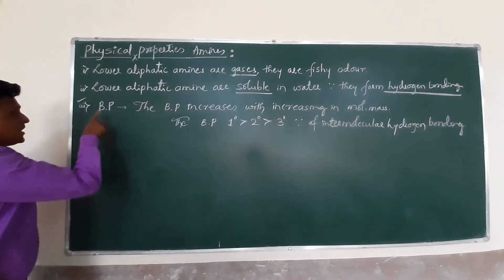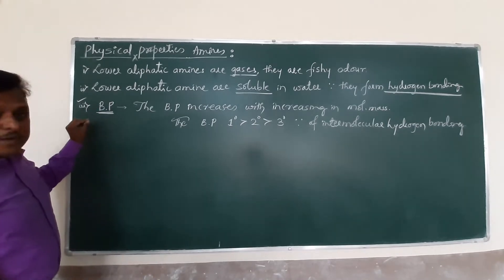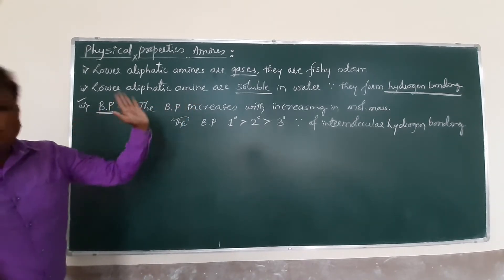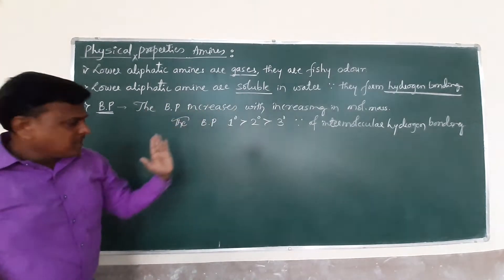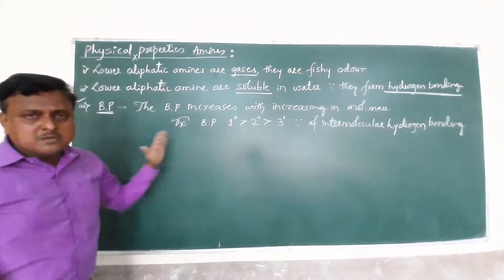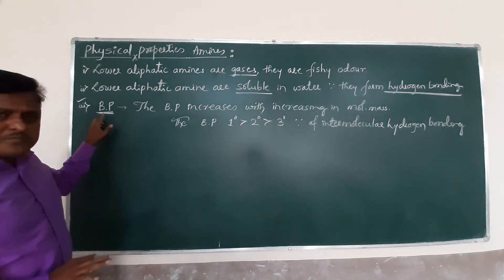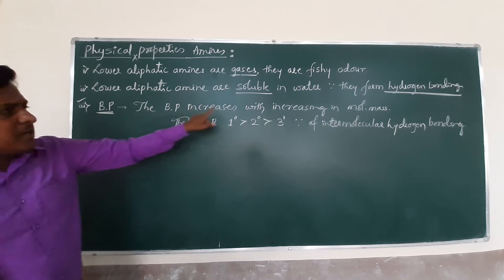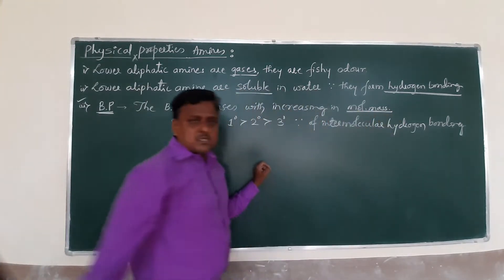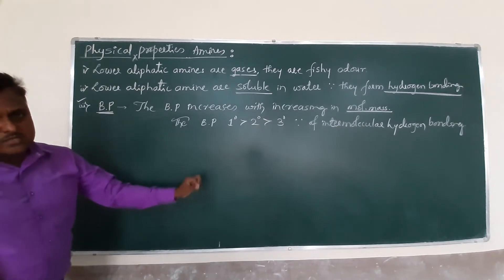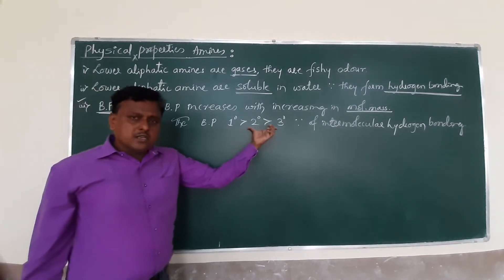The third physical property in your syllabus is the boiling point. The boiling point of amines is dependent upon molecular mass. As the molecular mass increases, the boiling point or melting point gradually increases. Similarly, the boiling point of amines is completely dependent upon molecular mass — as molecular mass increases, boiling point increases.